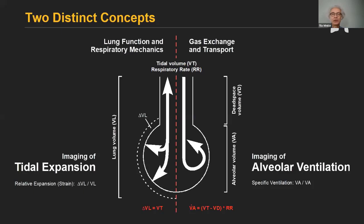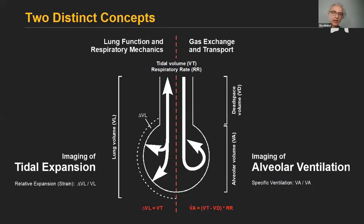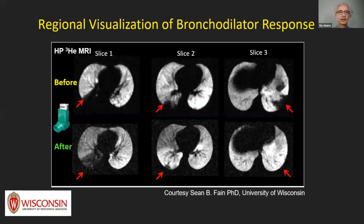In contrast to imaging of tidal expansion, there is the concept of gas exchange and gas transport. Fresh gases coming in through the airways have to pass through the dead space of the conducting airways to reach the alveolar space. Alveolar ventilation VA is equal to VT minus the dead space volume times the respiratory rate. One example is single breath inhalation of hyperpolarized helium for MR imaging, where the inhalation of the tracer doesn't reach regions of the lung we call ventilation defects, where airway obstruction occurs.